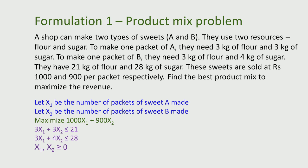We start linear programming with a simple example to understand the notations and also to understand the aspects of formulating a problem into a linear programming problem. The first formulation that we will be looking at is called a product mix problem, where we try to find out what is the mix of products that an organization should produce. We start with a very simple example, convert it into a formulation, and then define the terms and notation related to linear programming.